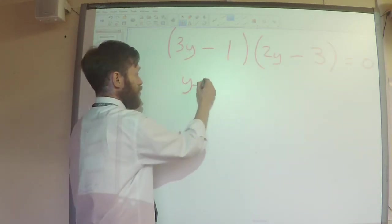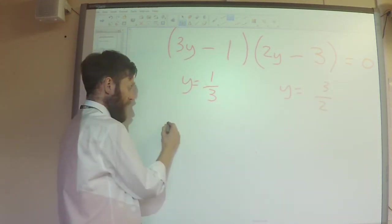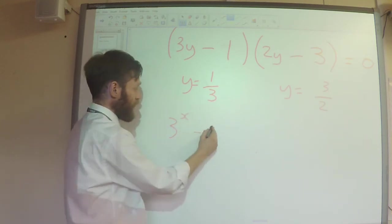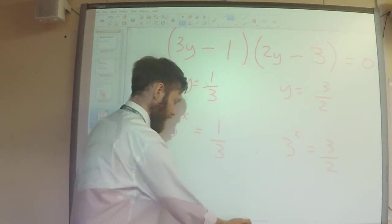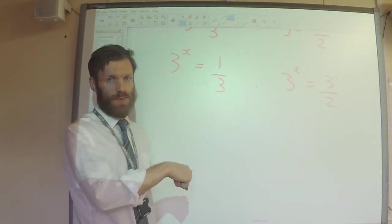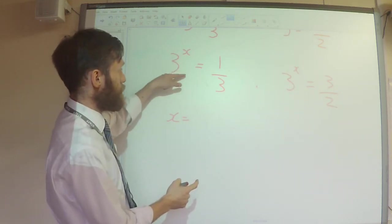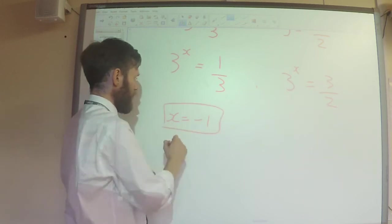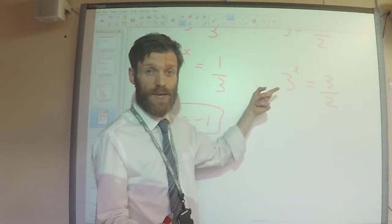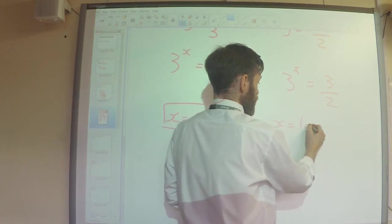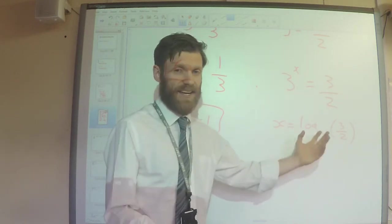So y equals 1 third, or y equals 3 over 2. Now remember the substitution: so 3 to the power x equals 1 third, or 3 to the power x equals 3 over 2. When we did this topic at the beginning of the year, you could answer the first one pretty easily by inspection — 3 to the power minus 1 gives 1 third. But you couldn't do the second one then. Now you can: x equals log to the base 3 of 3 over 2. You can tap that into your calculator and get your decimal answer.